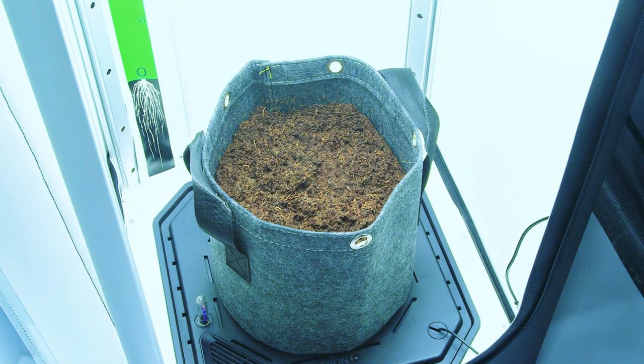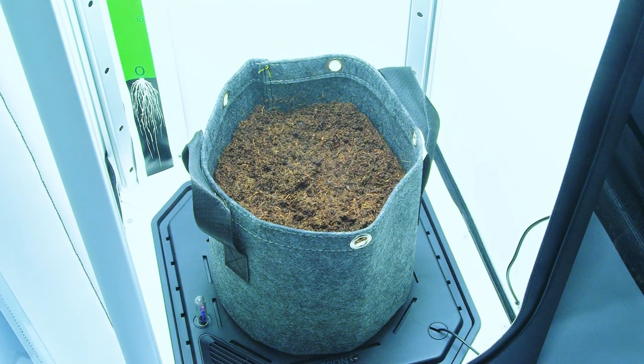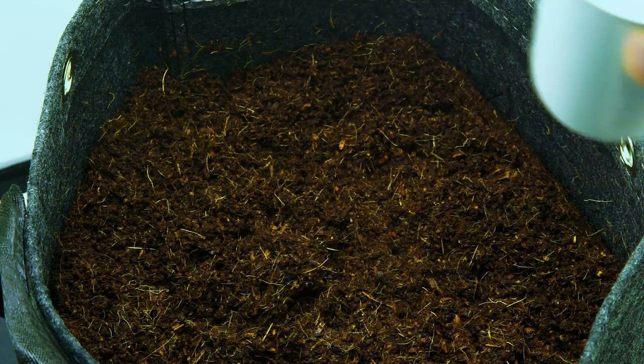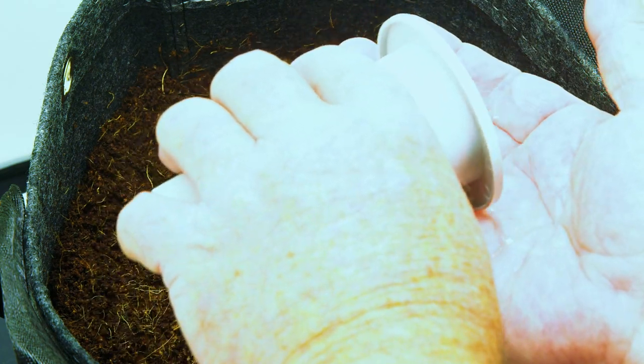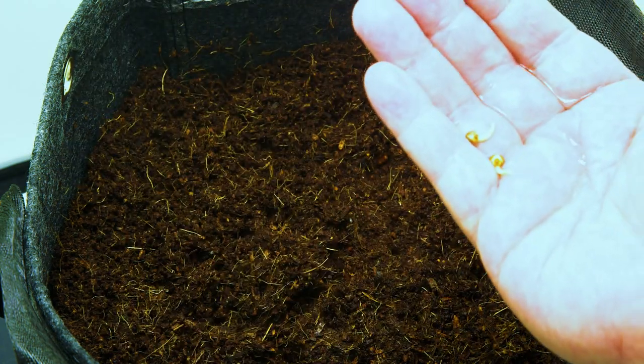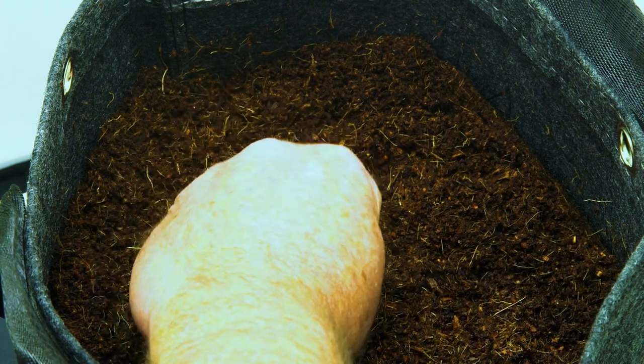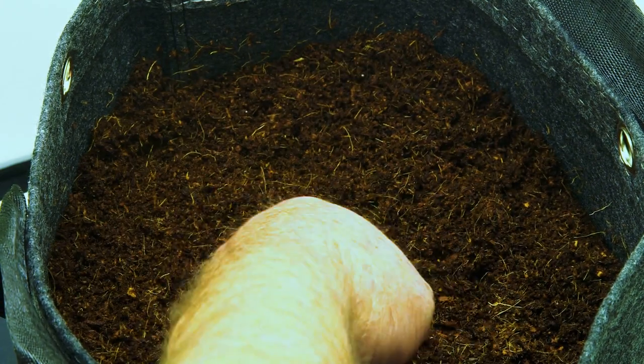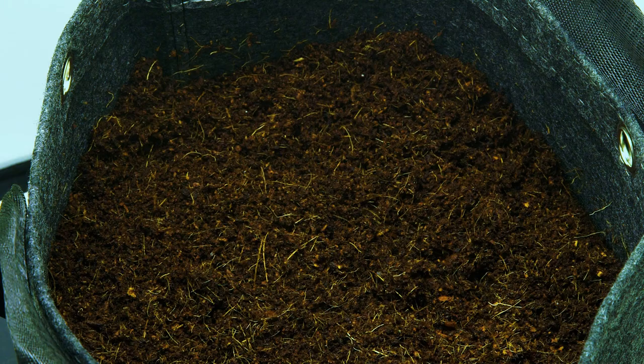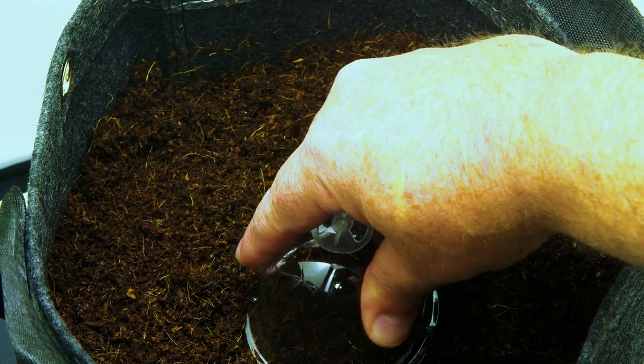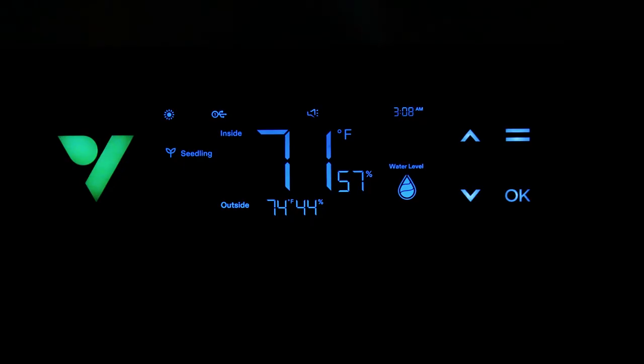It's all set up now with water in the base and the coco coir swollen and ready for the seed. I've sprouted a couple little seeds and I'm going to pick the best one. I'll put the other one outside and grow it outdoors. I'm just going to put it under the coco coir about a half inch or so and then put one of these little humidity domes over the top.